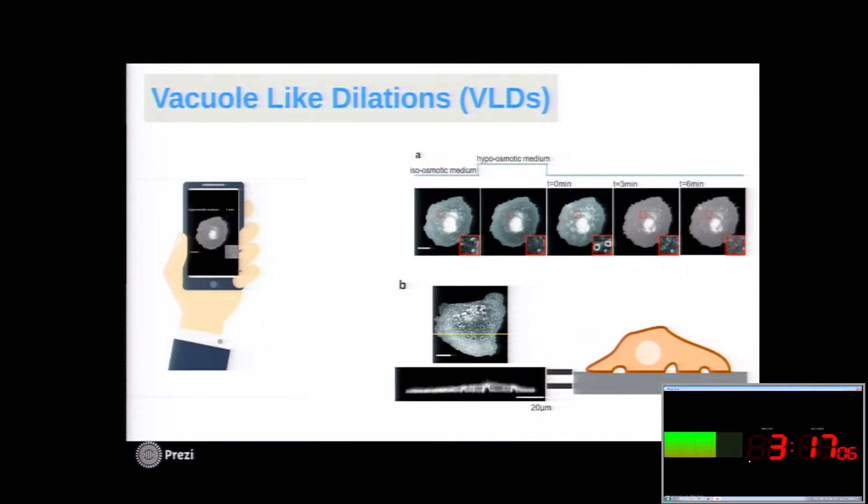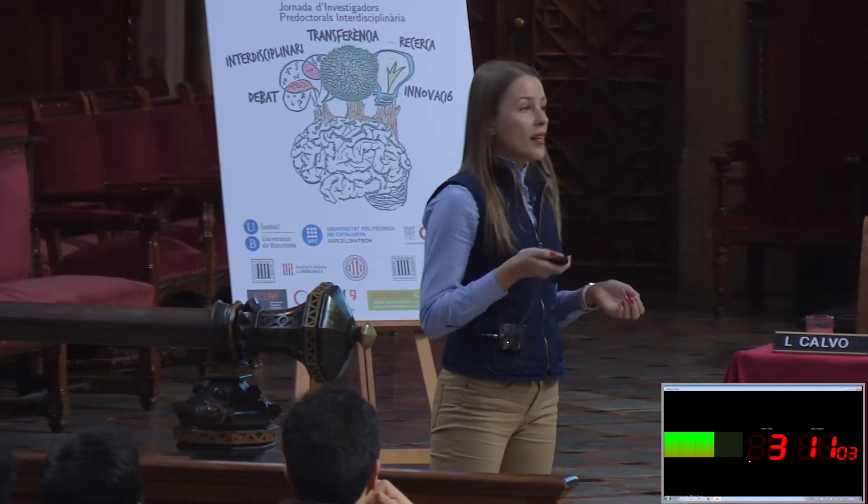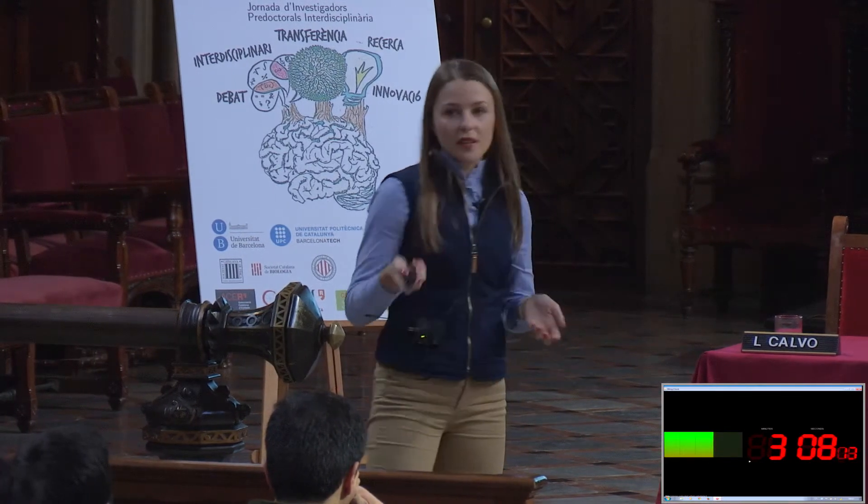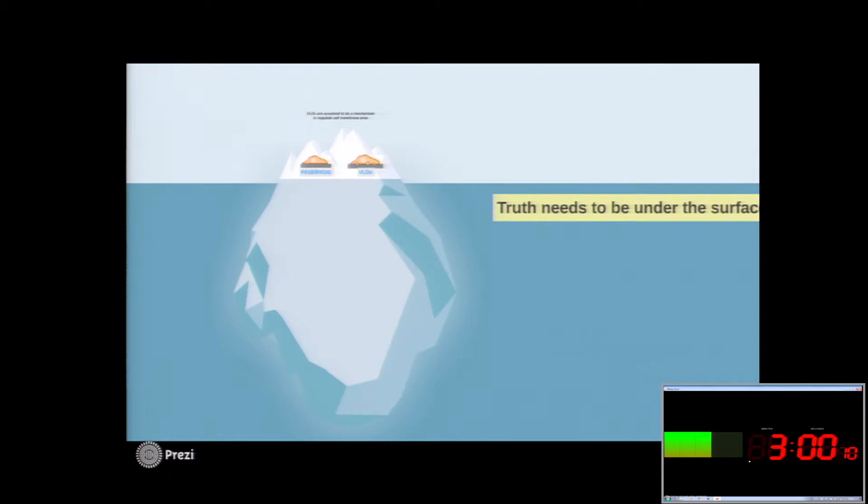The VLDs have been already observed before, and they have been assumed to be a mechanism to regulate cell membrane area. But as you could see, the reservoirs and VLDs are much different. So we thought that the nature of those structures might have another explanation, and it needs to be hidden under the surface.